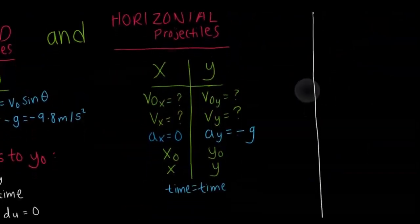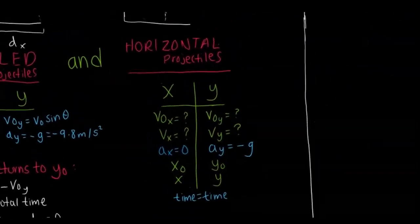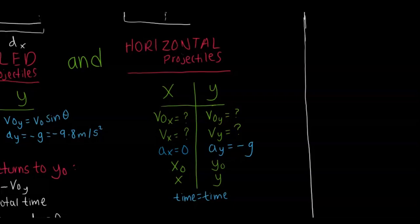Your initial acceleration in the x direction would always just be zero, because after you give it the initial velocity, there's nothing acting in the x direction since the sum of all the forces in the x direction would be zero when it's in the air. However, the acceleration in the y direction would just be the force of gravity at negative little g.